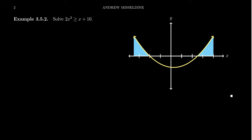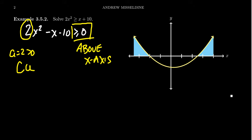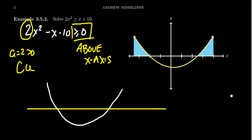Let's look at another example. Take 2x squared is greater than or equal to x plus 10. If I was solving an equation, I would set the right-hand side equal to 0. So we're going to do that for our inequality as well: 2x squared minus x minus 10 is greater than or equal to 0. Since this is greater than or equal to 0, I'm going to be looking for those points which are above the x-axis when I'm done. Because the leading coefficient is positive, our graph is going to be concave upward. So I have to solve the equation 2x squared minus x minus 10 equals 0 to find the x-intercepts.